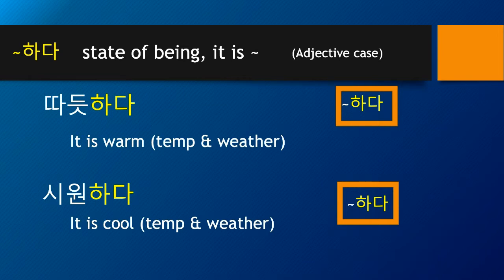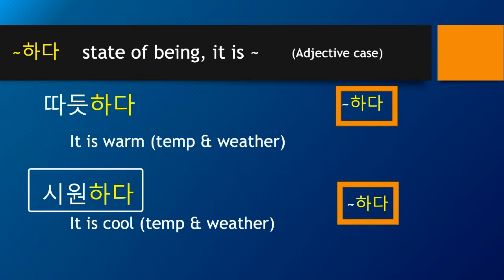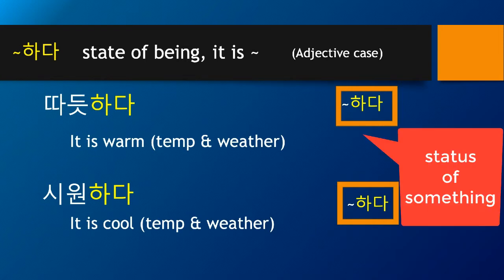As you may realize by now, 한글 has many different ways of representing different levels of status or things. 따뜻하다 and 시원하다 are warm and cool. So 따뜻하다 means it is warm, and 시원하다 means it is cool. These can be used for temperature as well as weather — for the temperature of beer or cola, or when you want to say the weather is cool. As a summary, when 하다 is used with an adjective, it represents the status of something.